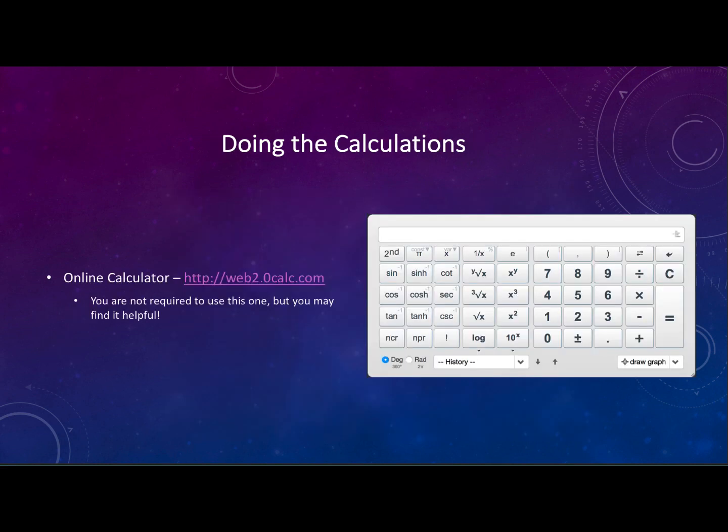Well you will need a scientific calculator. Those are available, often your smartphone will have one built into it or you can download a free one as an app for your smartphone. If not you can also use one that I recommend here which is an online calculator at web2.0calc.com. So if you go there you should pull up a calculator that looks much like this. It does have to be a scientific calculator and does have to show specifically the tangent function that we're going to be using.